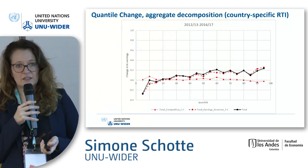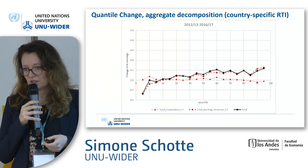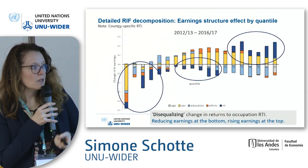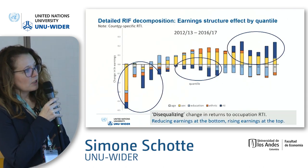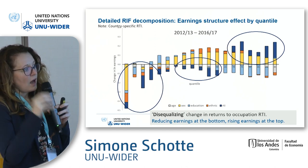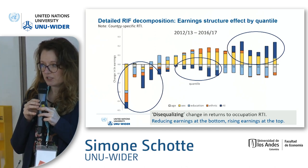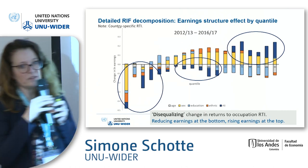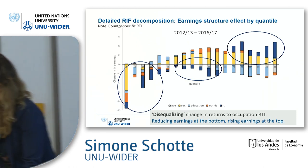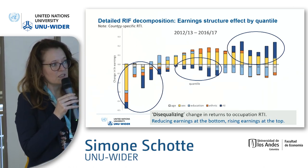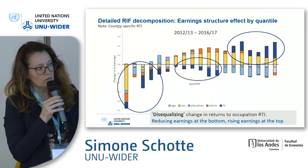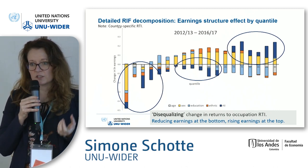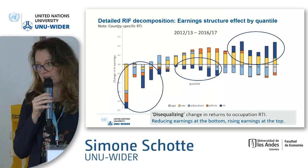Doing the same decomposition for the second period: again, the earnings structure explains most of the change. Looking at the decomposition, we observe a strong unequalizing effect of the remuneration of RTI — a negative contribution at the bottom and a positive contribution at the top of the distribution. So what we observe is that the way routine tasks are remunerated in the labor market contributed to the rise in inequality in Ghana in the second period.